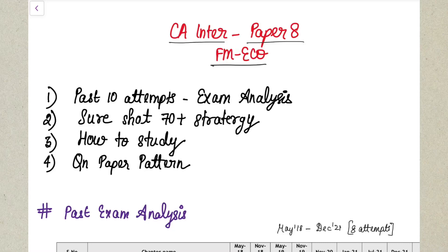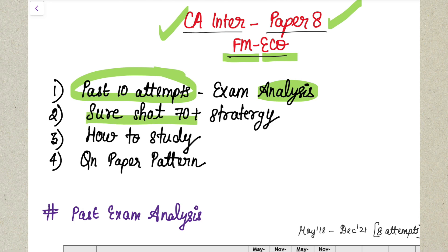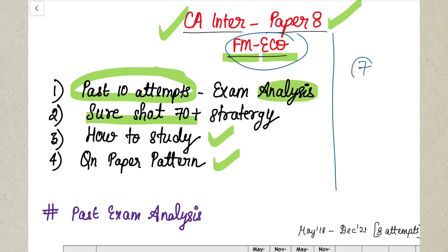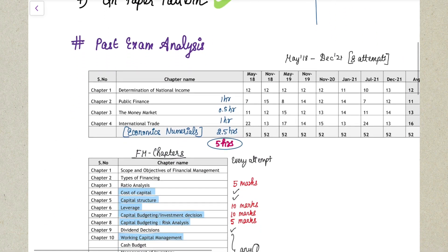Hello guys, welcome to Bamna's Online Academy. In this video we are going to discuss the CA Inter Paper Number 8 - Financial Management and Economics for Finance - paper analysis. We've analyzed the past 10 attempts' question papers, from which we can easily and sure-shot score 70 plus marks in your examination. This video also covers how you have to study for your FM Economics paper and what the question paper pattern is.